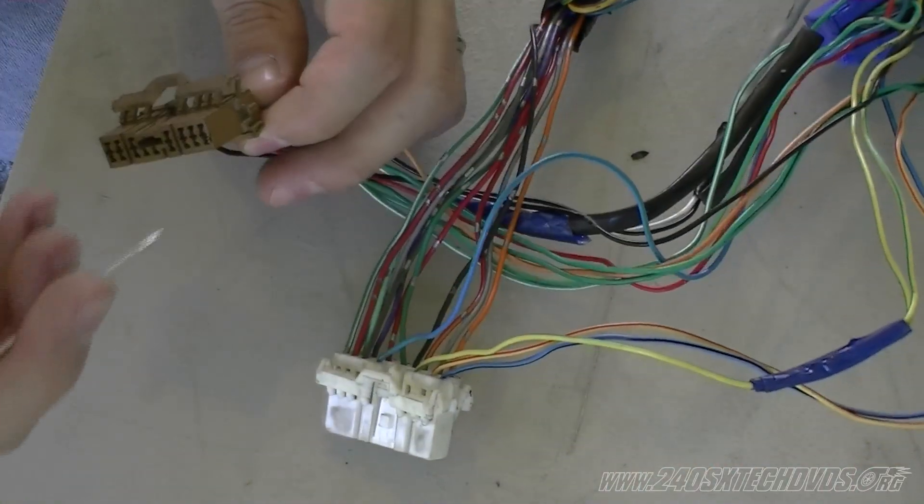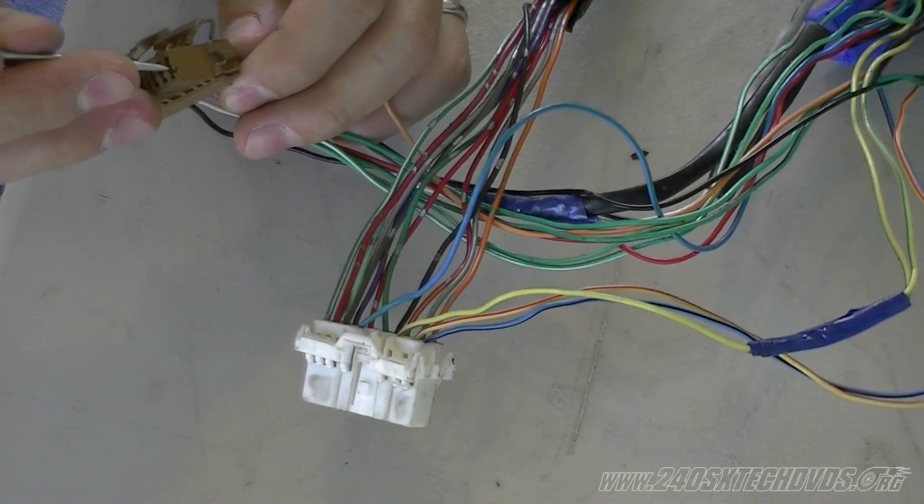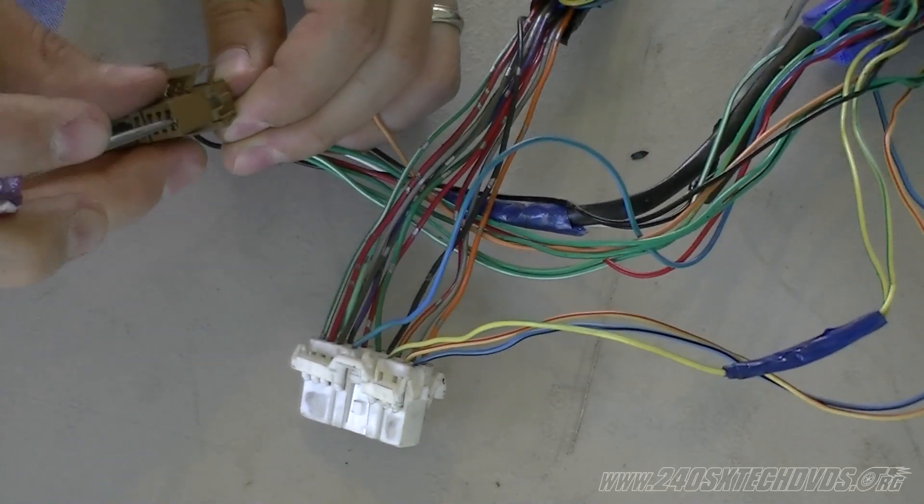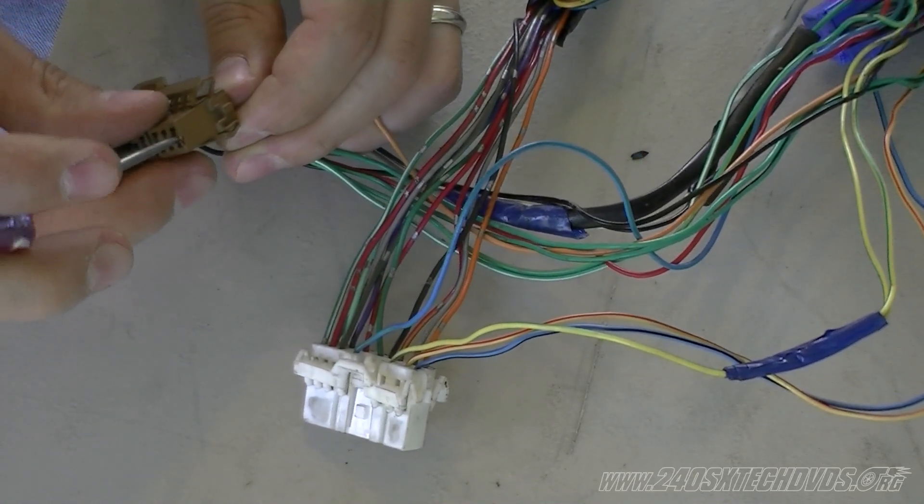Next is the orange wire. I'm going to de-pin it from the KA connector and de-pin it from the dual overhead connector.